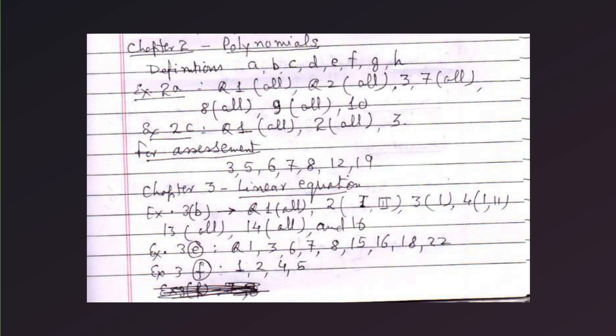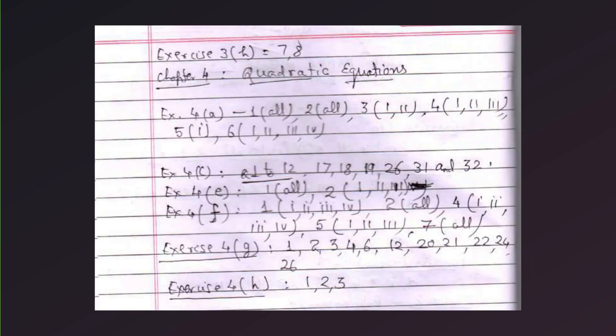Chapter 3, linear equations. Exercise now 3B, question 1 all, 2 number 1, 3 number 3, 1, 4, 1, 2, 13 all, 14 all, and 16. Exercise now 3E, equation number 1, 3, 6, 7, 8, 15, 16, 18, and 22. Exercise 3F, 1, 2, 4, 5. Then exercise number 3S, question number 7 and 8.